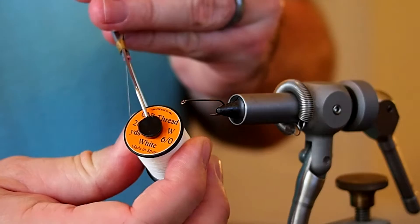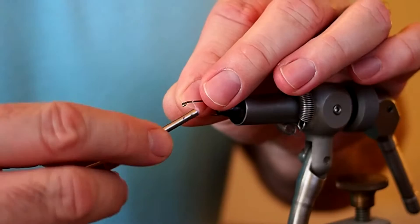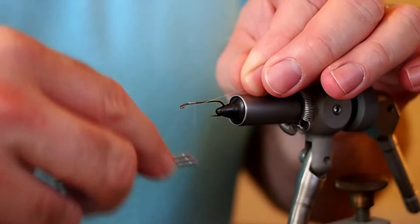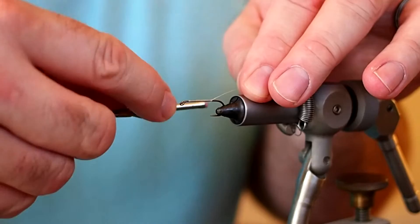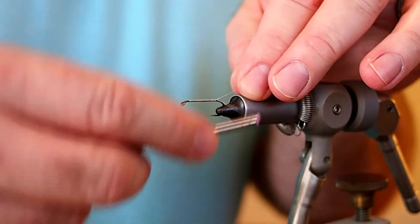Go ahead and lay down a base of thread starting the hook eye's length behind the eye and take my thread down to the barb and I'm just going to snip away the excess thread.